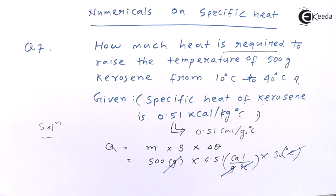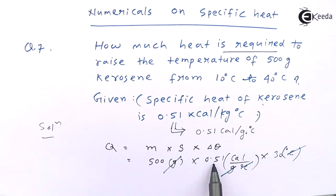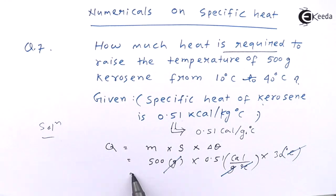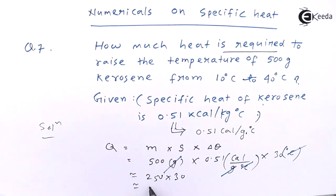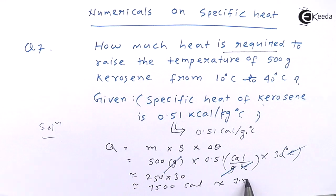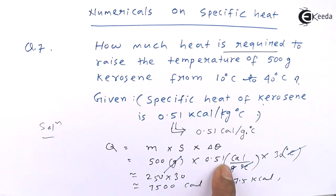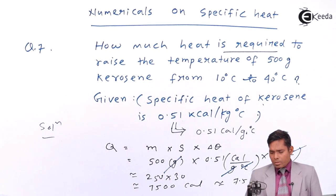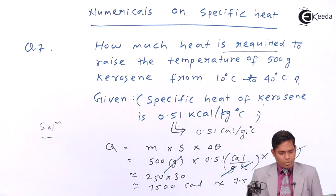So it is 30 into 500 into 0.51, which is nearly half, so nearly 250. 250 into 30 — it's nearly 7500 calorie, or 7.5 kilocalorie, is the answer. I have just taken 0.51 as 0.5, so this is approximately 7500 calorie or 7.5 kilocalorie.